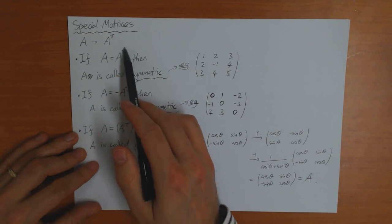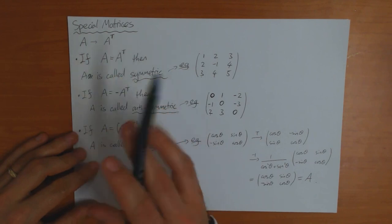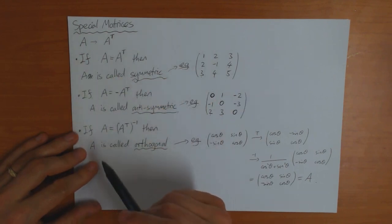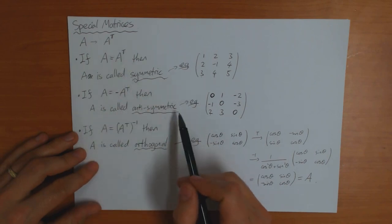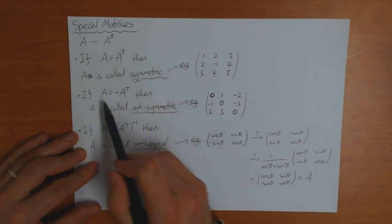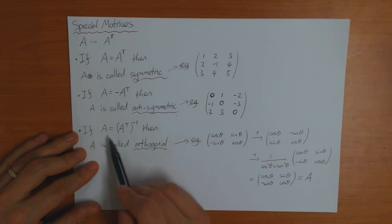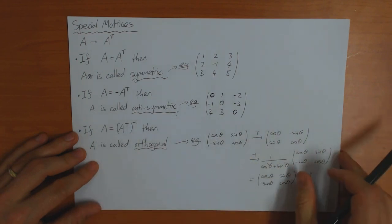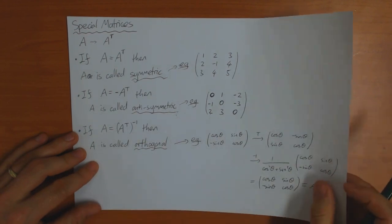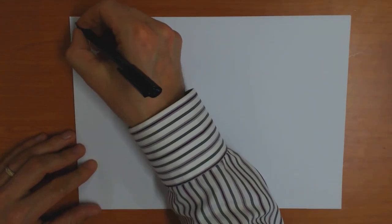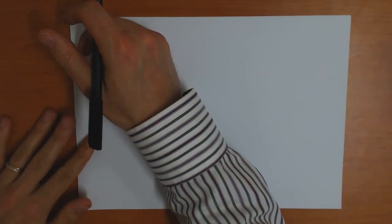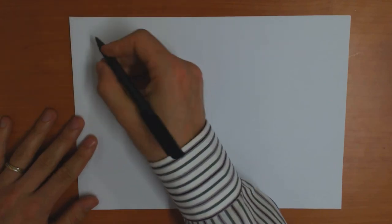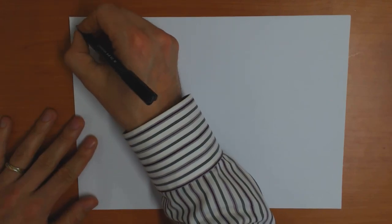So using this idea of transpose, you can define these three kinds of special matrices. Symmetric matrices satisfy A equals A transpose, anti-symmetric matrices satisfy A equals minus A transpose, and orthogonal matrices satisfy A equals A transpose inverse. Now I'm going to define three more kinds of special matrix which are related to these, and these are for complex matrices.